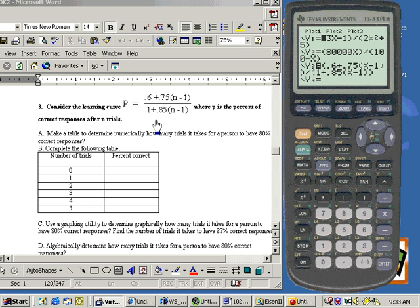As N gets larger and larger, going out the x-axis, is the percentage of correct responses going up higher and higher? Is it going to drop off, get lower, or is it going to level off to a horizontal asymptote? Well, there's a couple ways of finding a horizontal asymptote that we talked about.